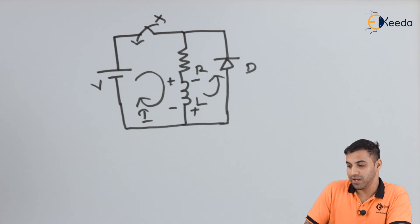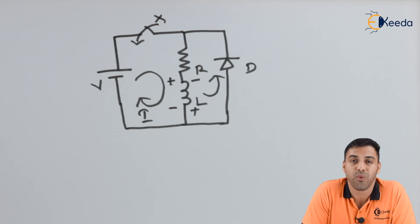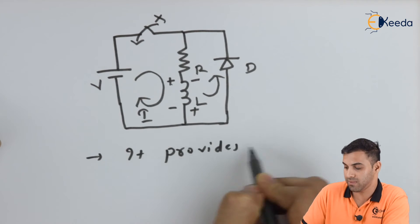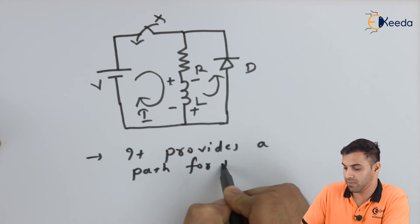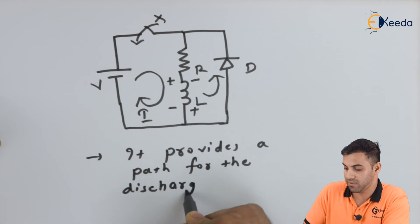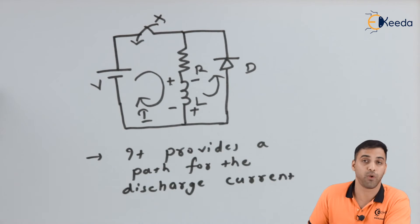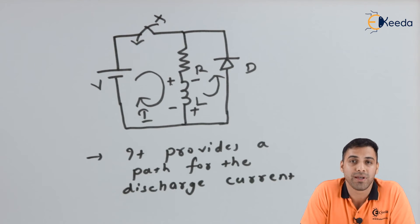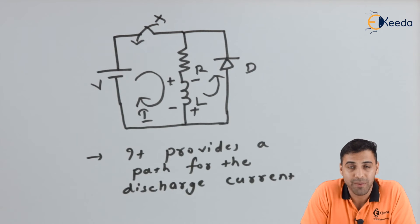Hence friends, when we use a free wheel diode, one of the best advantages, or one of the major advantages is that it provides a path for the discharge current. So friends, using a free wheel diode is same as using a flyback in a motor. So free wheel diode, for the same reason, is called a flyback diode.